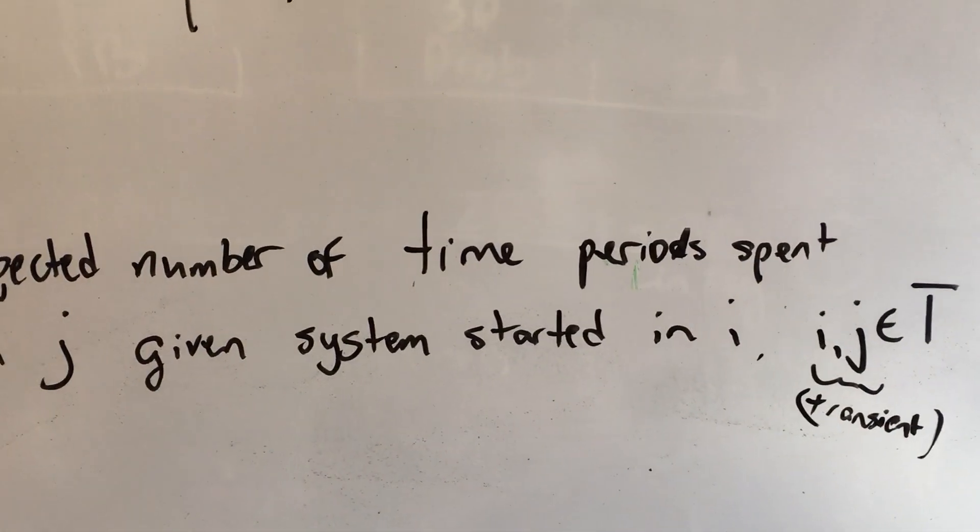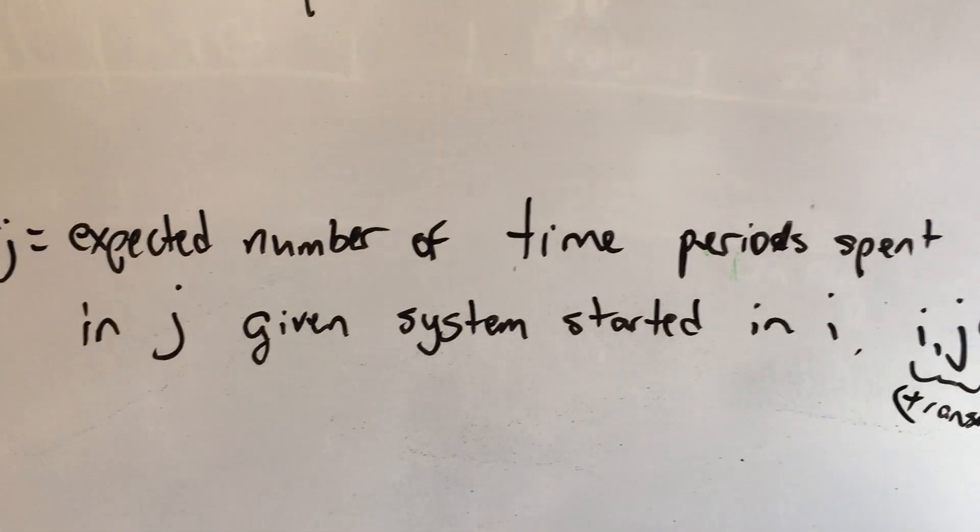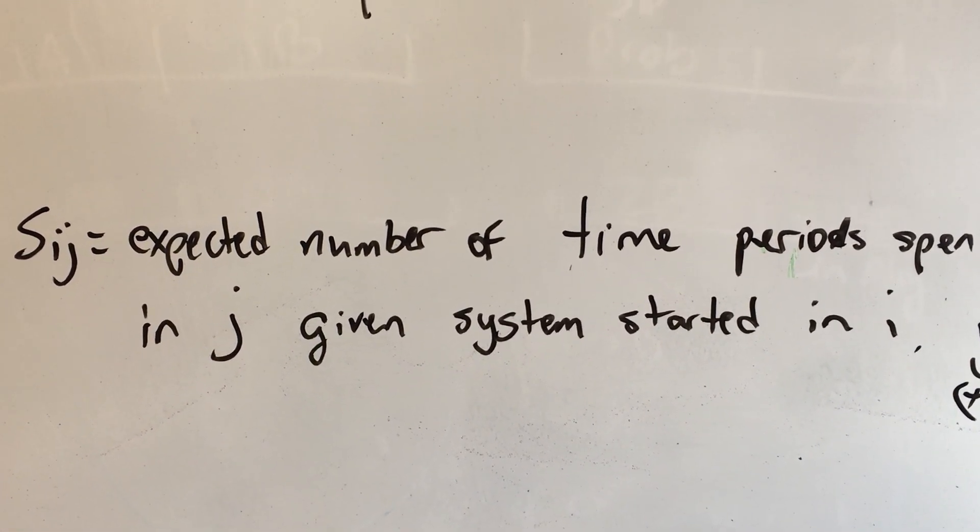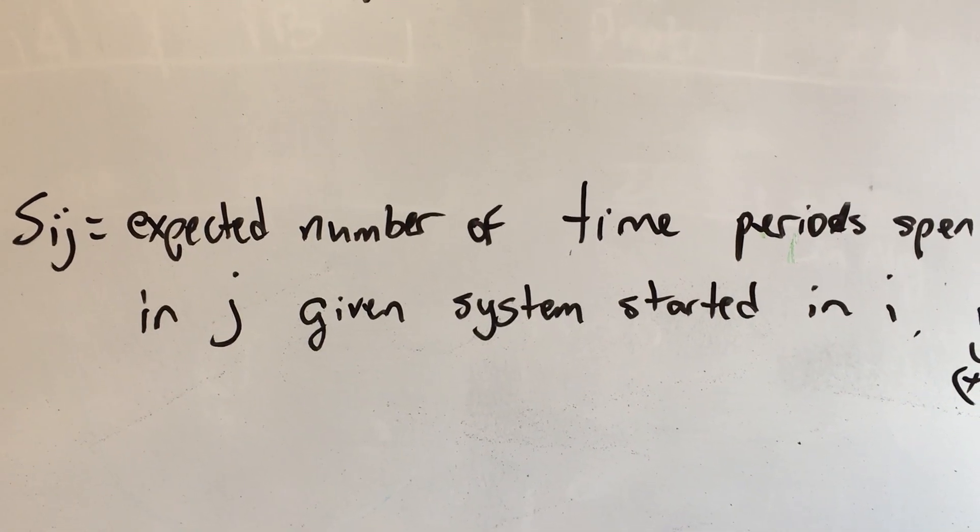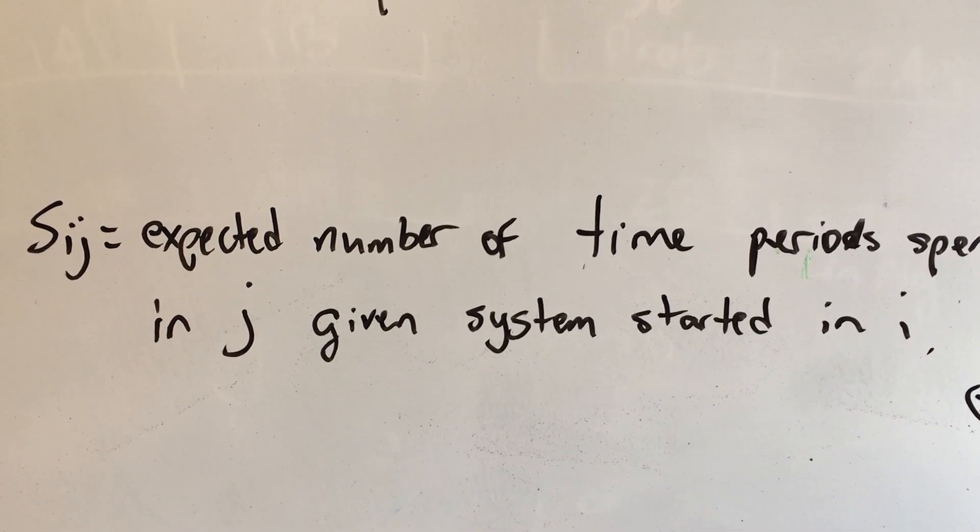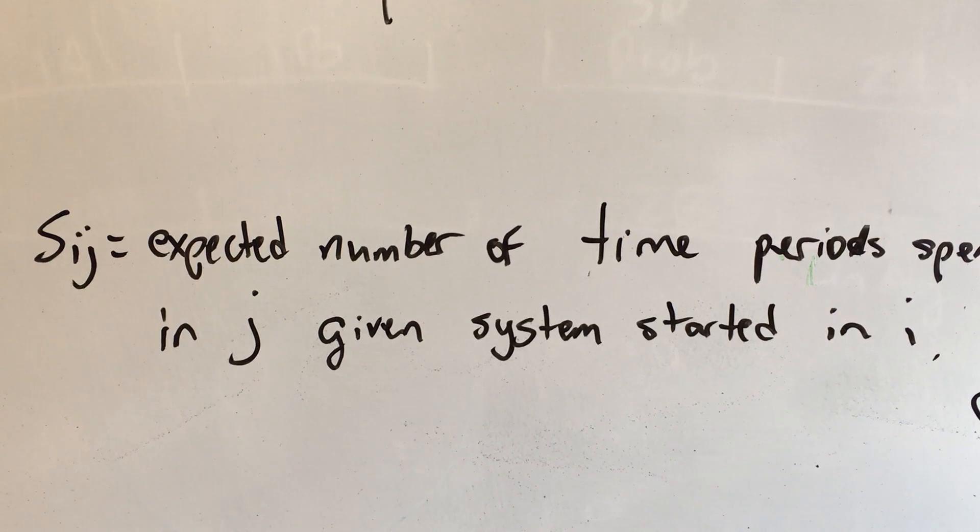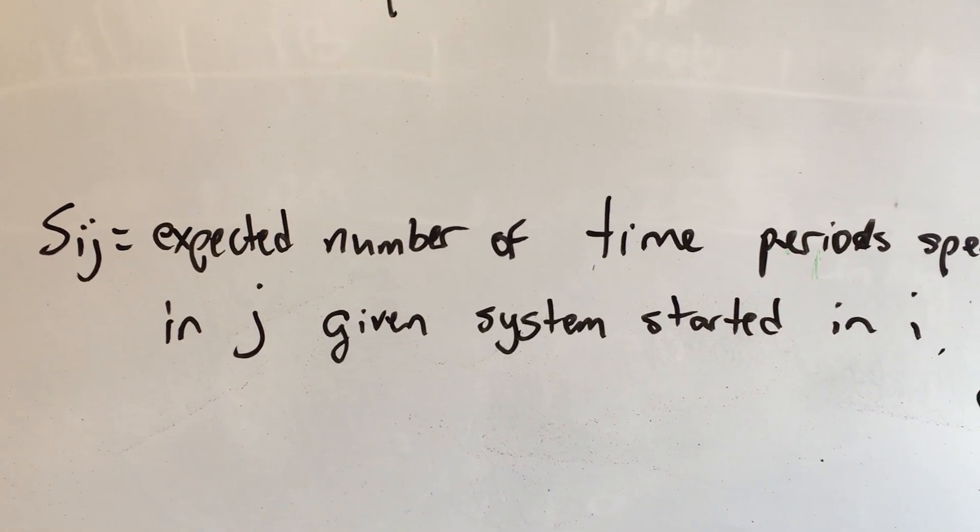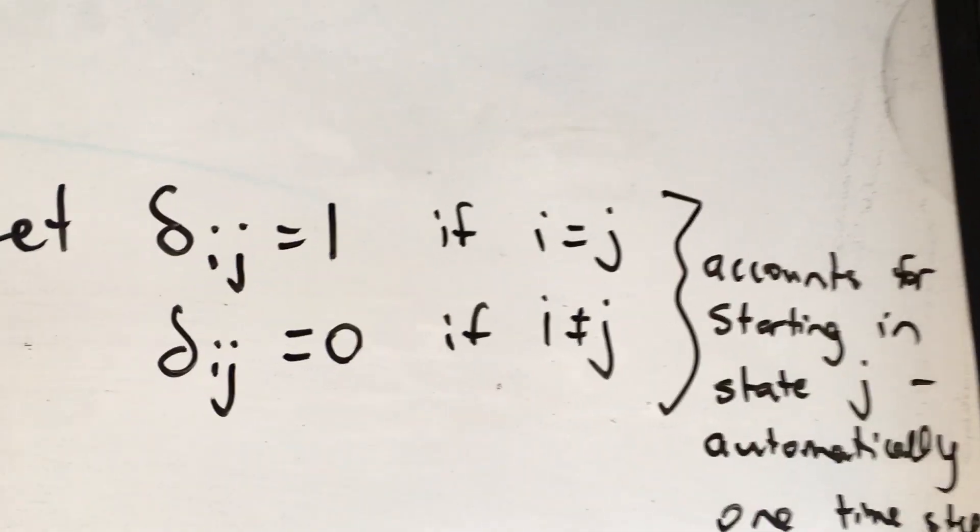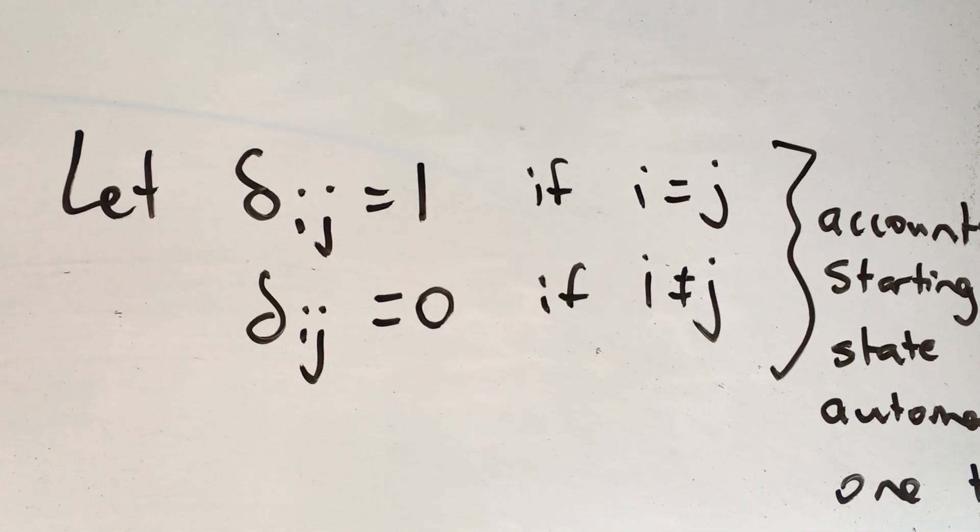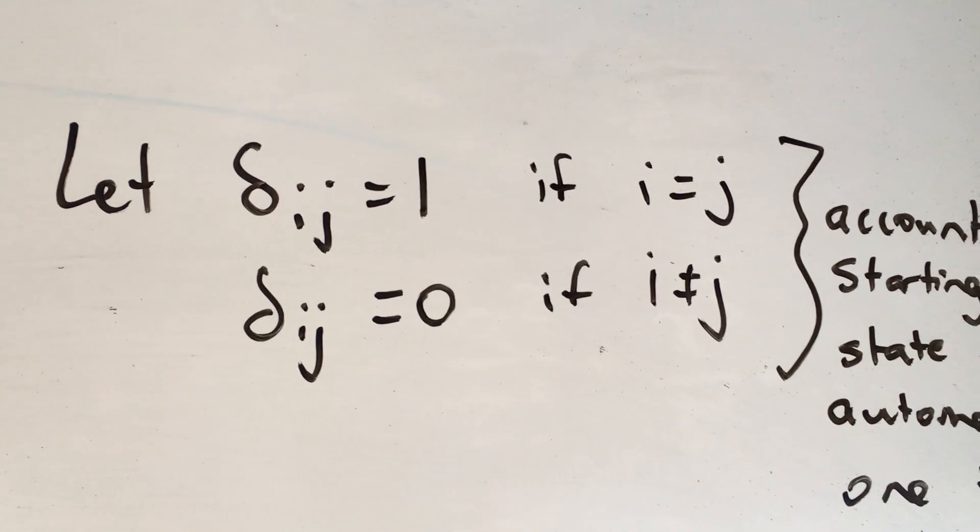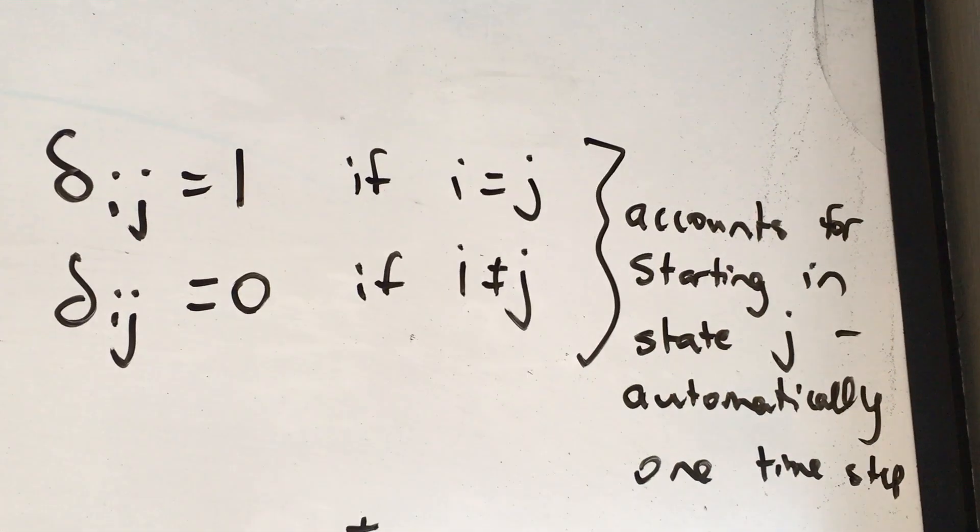So let's think about this. If you start off in, say, state two, the expected number of time periods that you spend in state two is going to be at least one, right? Because if you're in state two to begin with, you know that you're going to be at state two at the end of the time period. So you've got to start off with at least one time period. So we're going to call delta IJ one if I and J are the same and zero if they are not. This accounts for starting in state J.